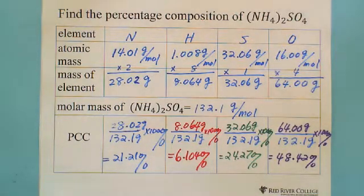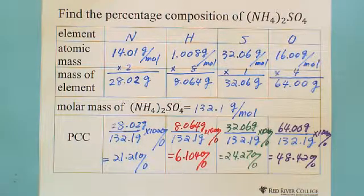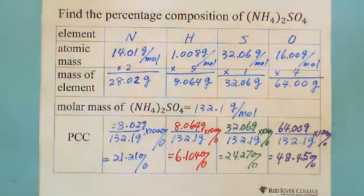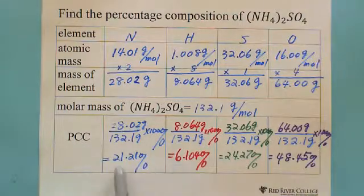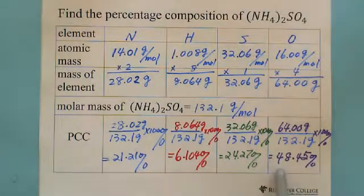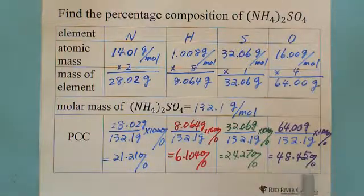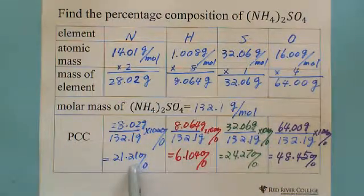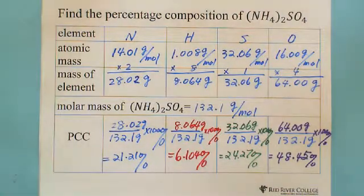Double-check the last one: 64 divided by 132.1 gives 48.45%. When you add all the percentages together — 21.21 plus 6.104 plus 24.27 plus 48.45 — you get approximately 99% to 100%. Sometimes rounding of the decimals causes the total to be slightly off from exactly 100%, but this is not a big deal. All the percentages are mostly correct; it's just a rounding problem.